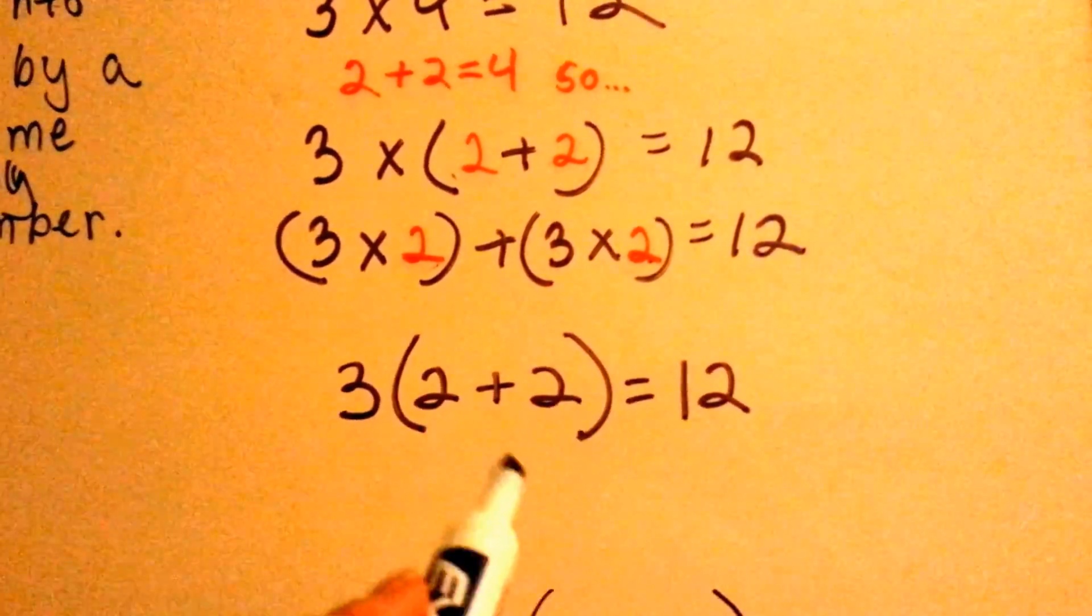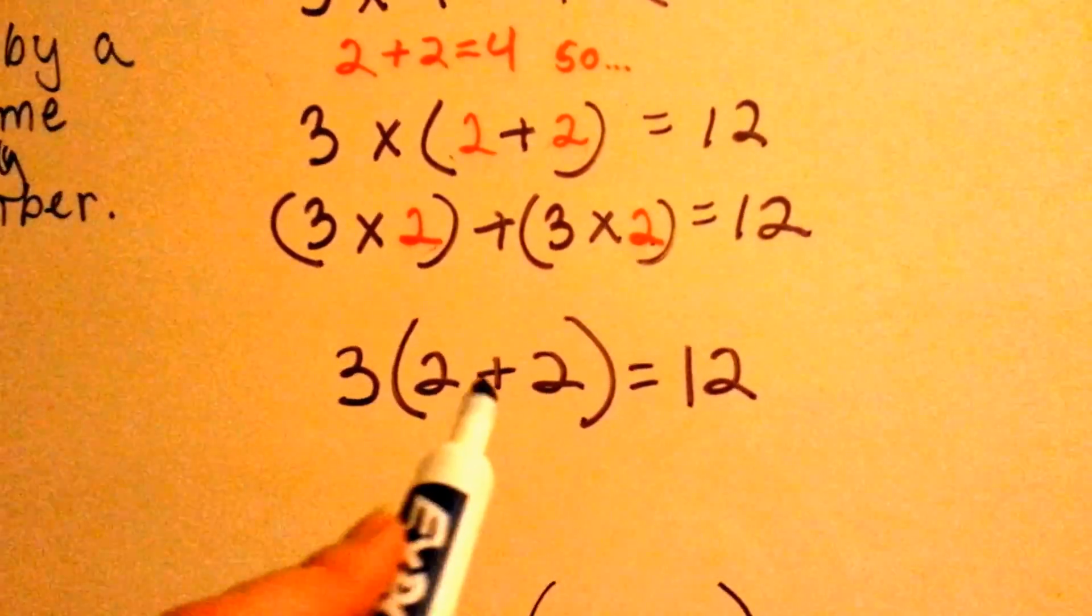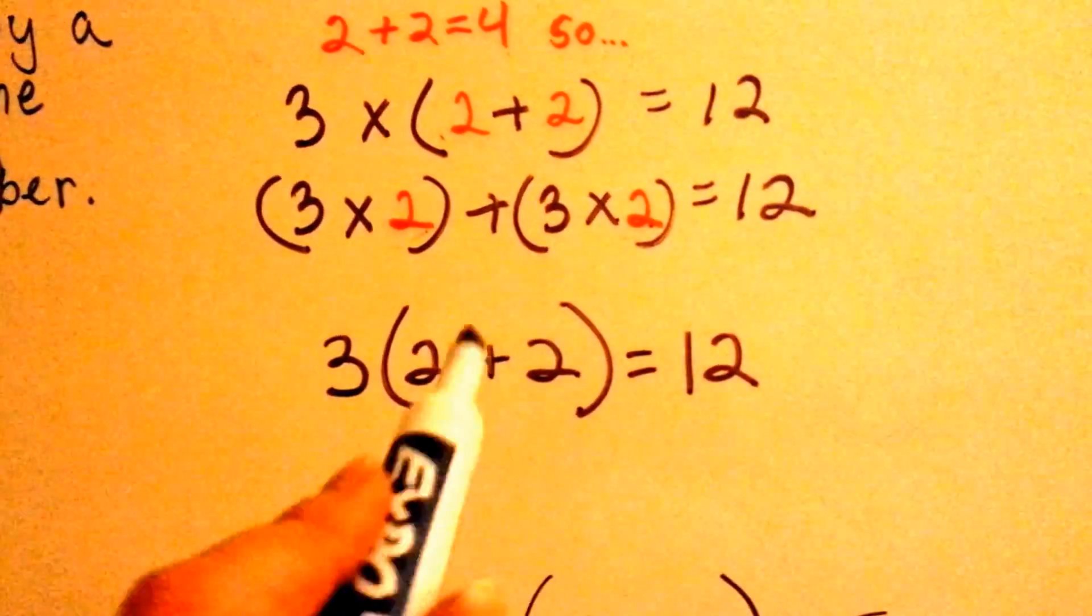So, 3 times 2 plus 2. You do what's inside the parentheses first. 2 plus 2 is 4. 3 times 4 is 12. Let's try one.